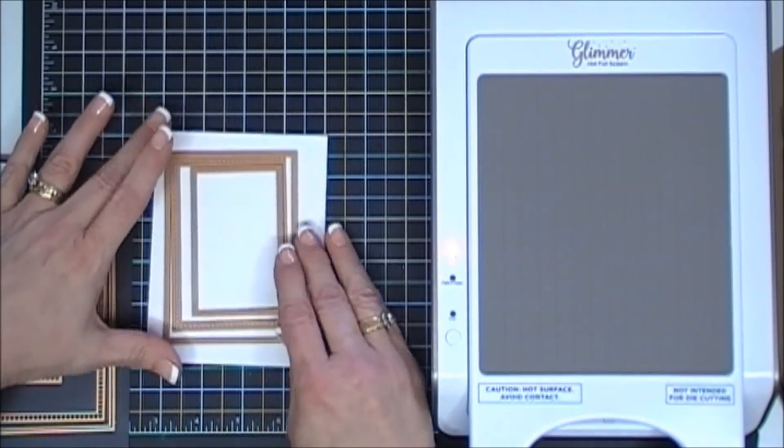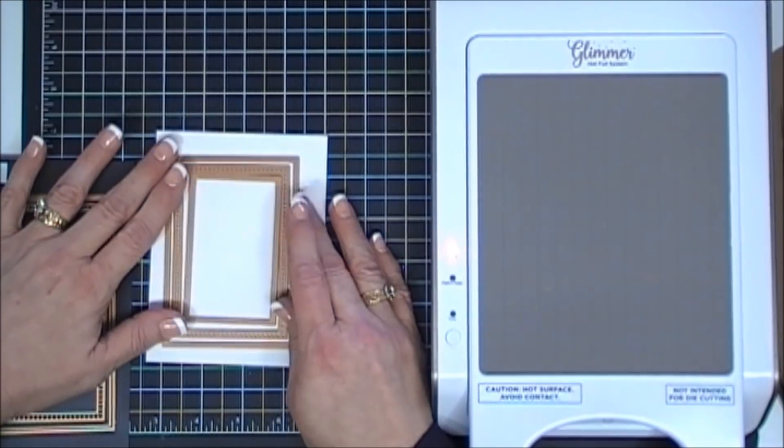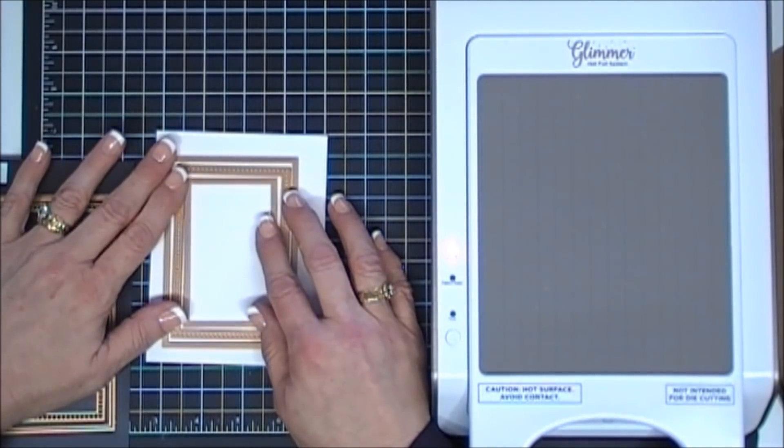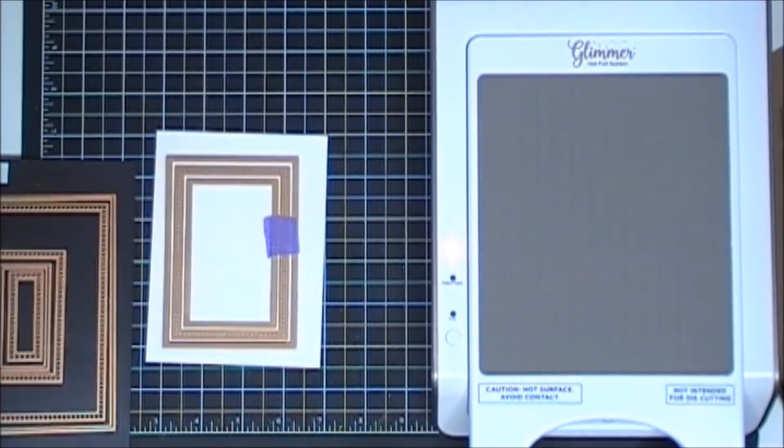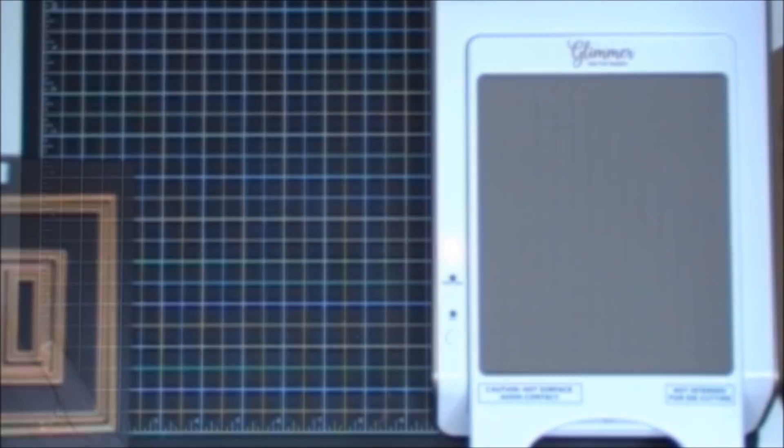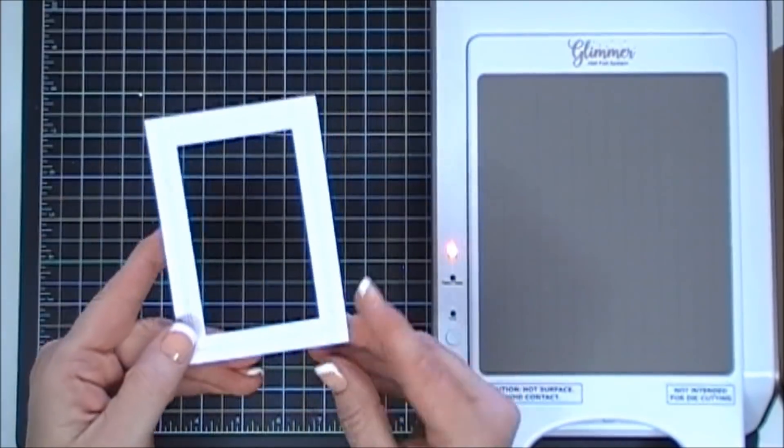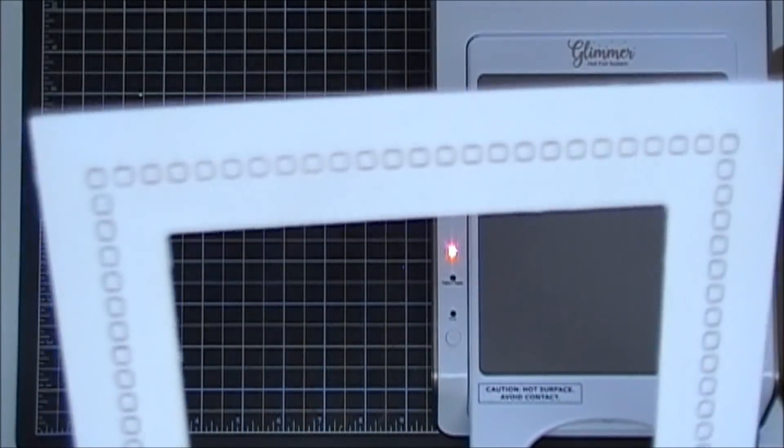I'm going to create a frame with the hemstitch rectangles here. I'm going to grab three of them. The inside one and the outer one will die cut out the frame, and then the inside element will just cut out polka dots.